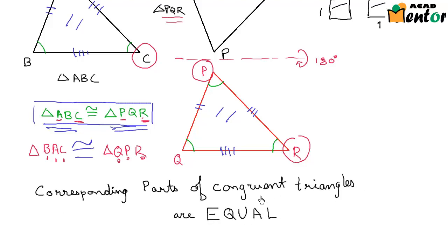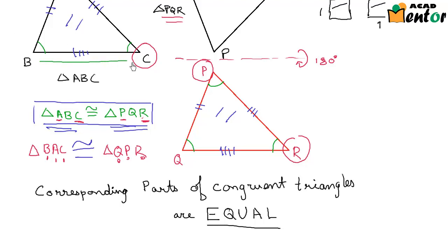Corresponding parts of congruent triangles are equal. Let's consider side BC of triangle ABC. BC corresponds to side QR. You can also see it in the name: the first and last letters BC match with the first and last letters QR.